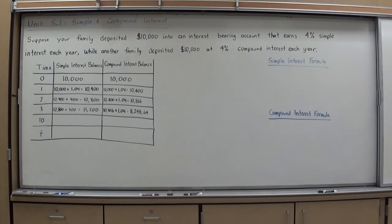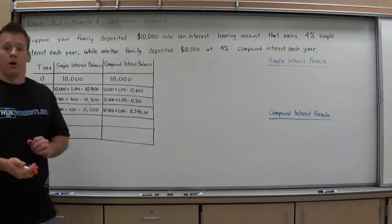One of our first examples is a financial example regarding money and investment banking. Suppose your family deposited $10,000 into an interest-bearing account that earns 4% simple interest each year. Another friend's family deposited the same amount of money at the same interest rate, 4%, but it's compound interest each year.